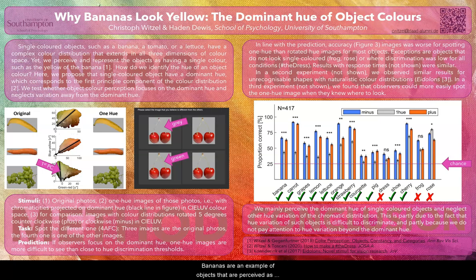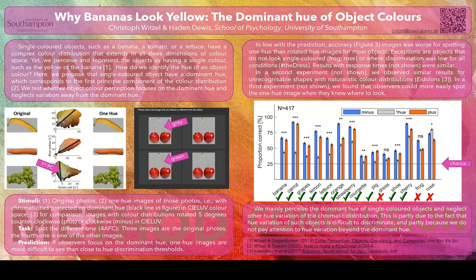Bananas are an example of objects that are perceived as having one single color. This is the case even though the color information at the surface of such objects corresponds to a complex color distribution in three-dimensional color space.